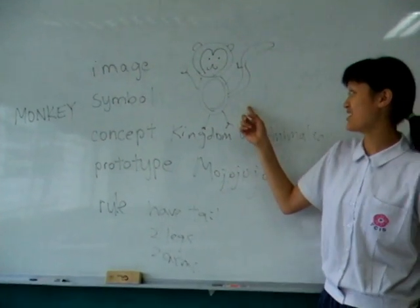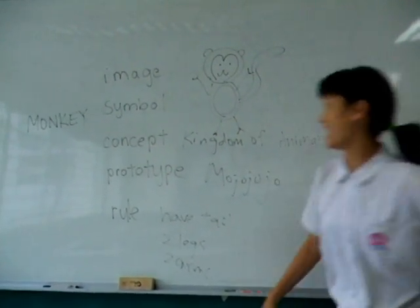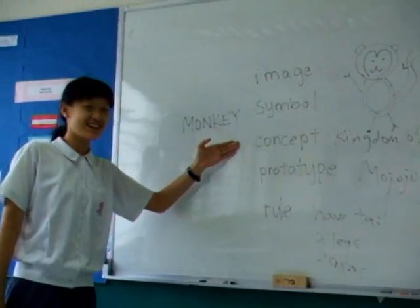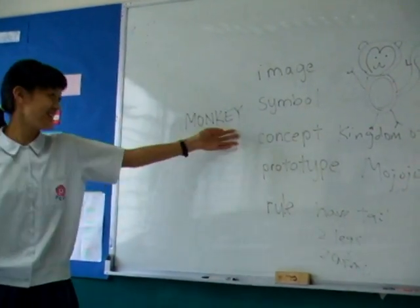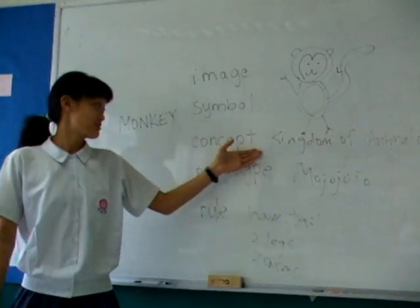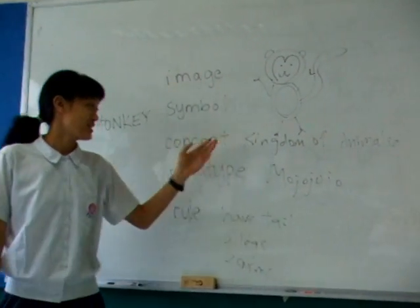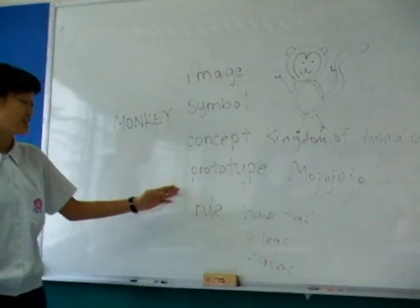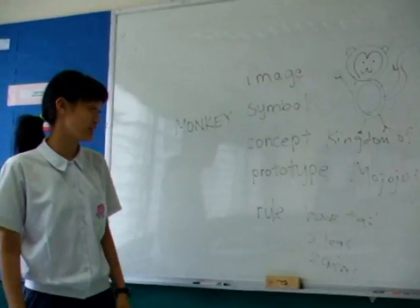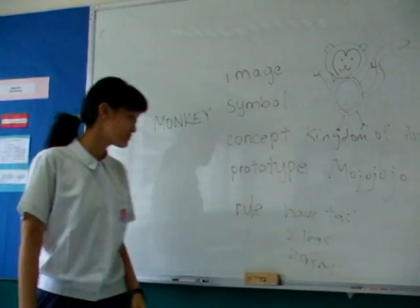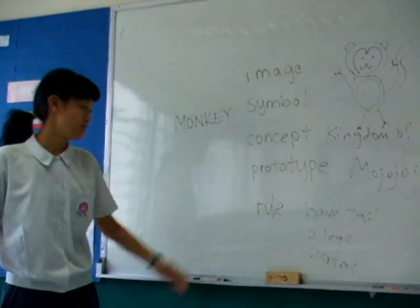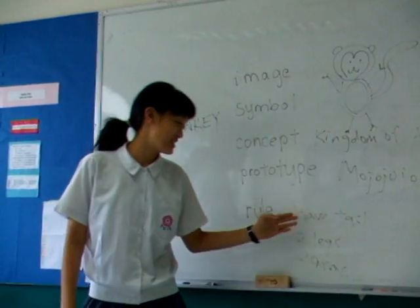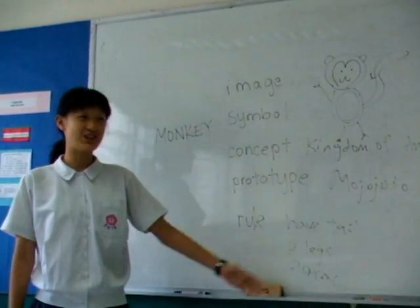This is an image of a monkey — monkey. And M-O-N-K-E-Y is the symbol of monkey. Monkey is categorized in the kingdom of Animalia. The best example for a monkey is Mojo Jojo. And the rule is that the monkey has a tail, two legs, and two arms.